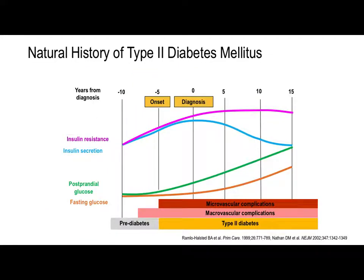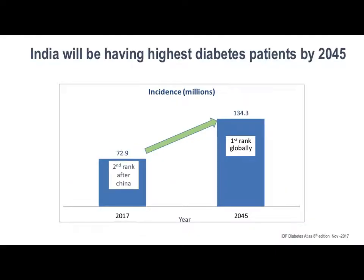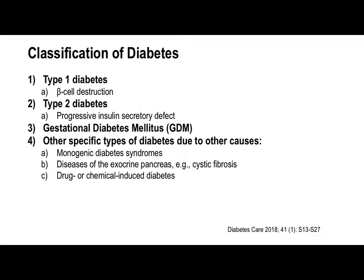I am sure you all are very much aware of the natural history of type 2 diabetes mellitus. Once there is a diabetes onset, there is a definitive curve about various factors — insulin resistance, insulin secretion, and also postprandial glucose. These are the factors whose variation causes various complications, which can be in the form of microvascular or macrovascular complications. India is going to be the world's diabetes capital, but what can we do? How can we take care of all those problems which are going to come up in the future?